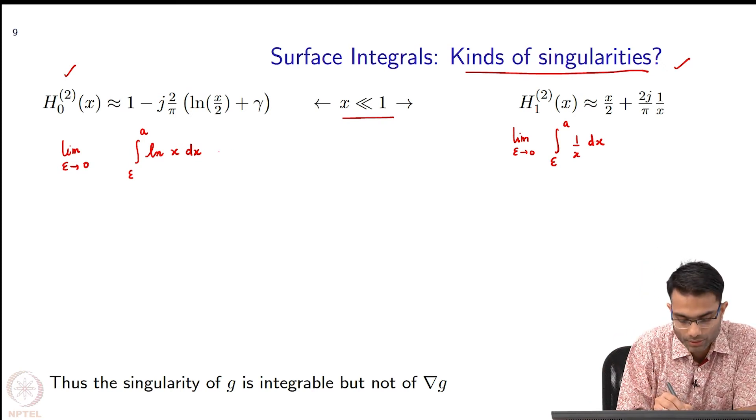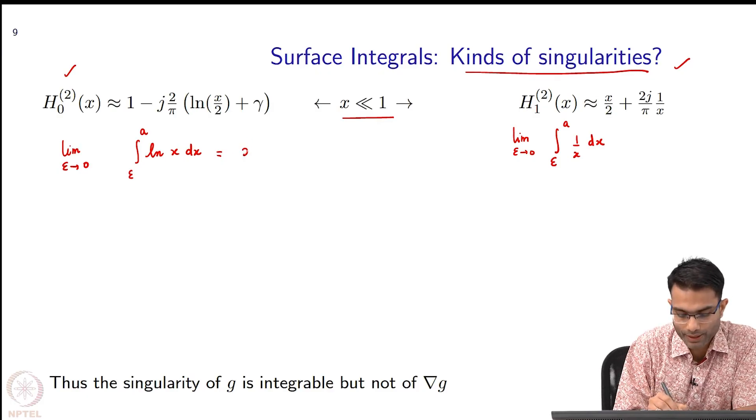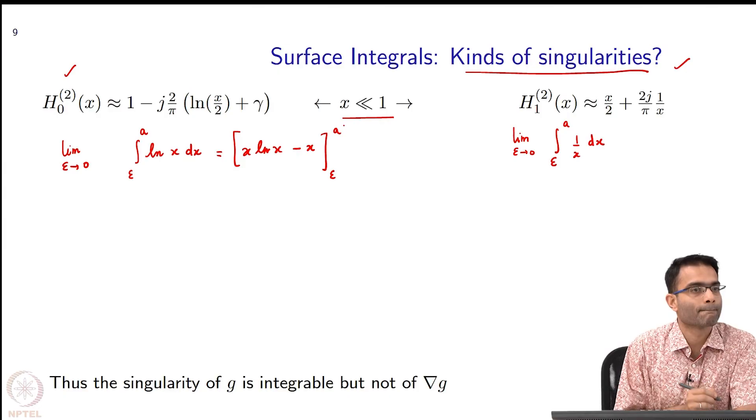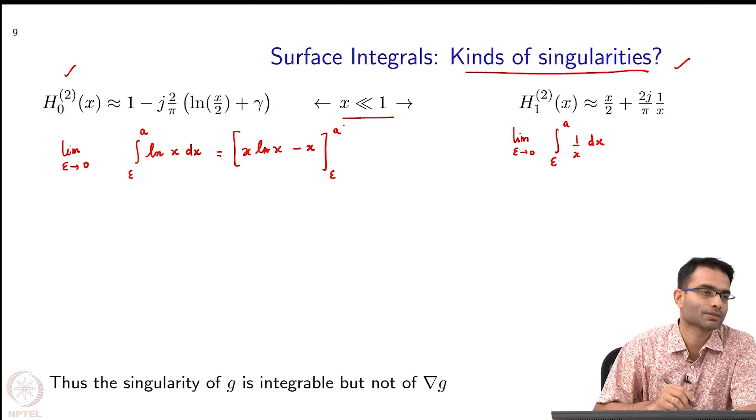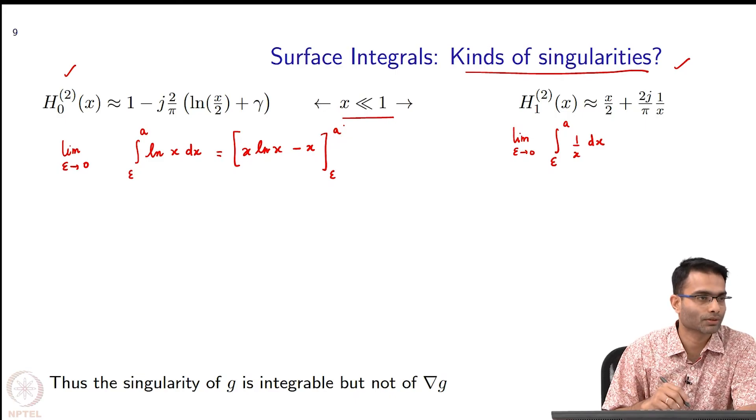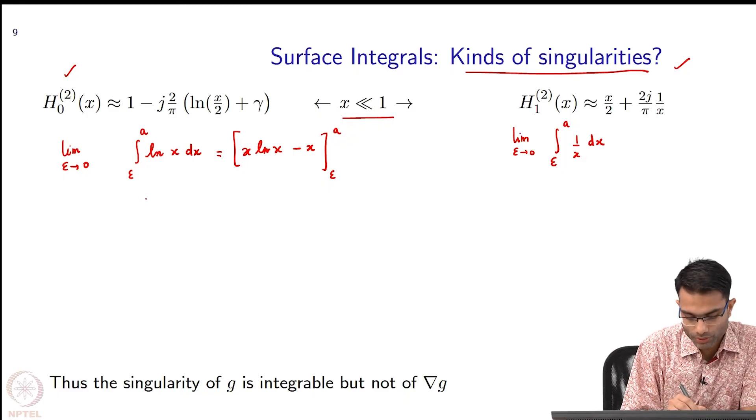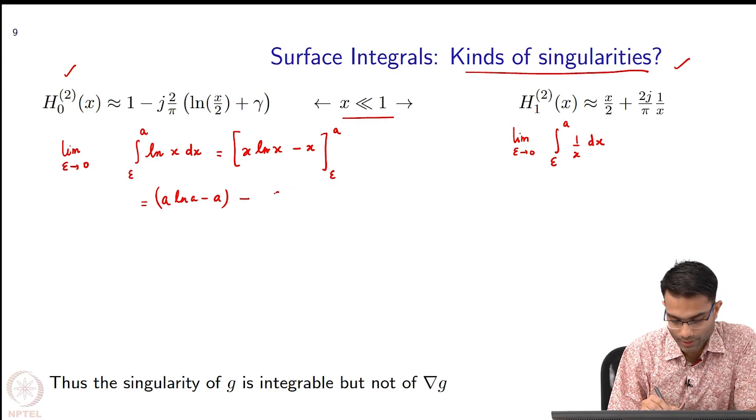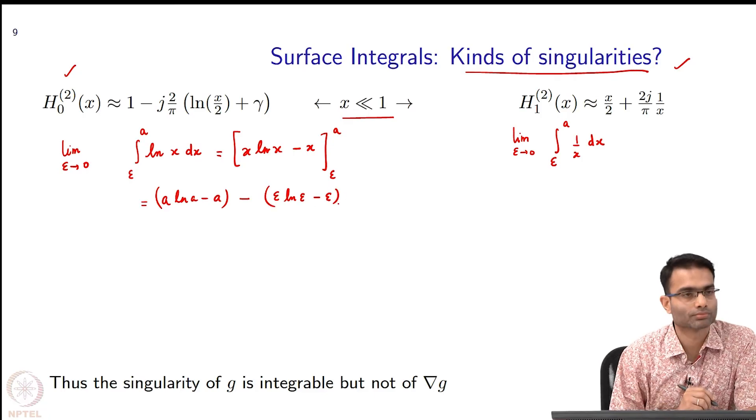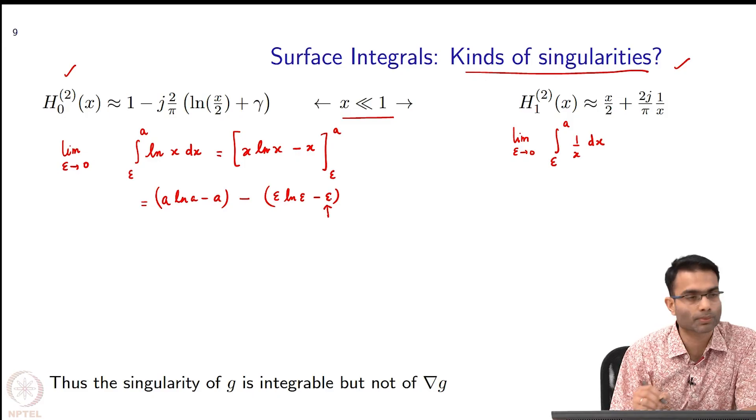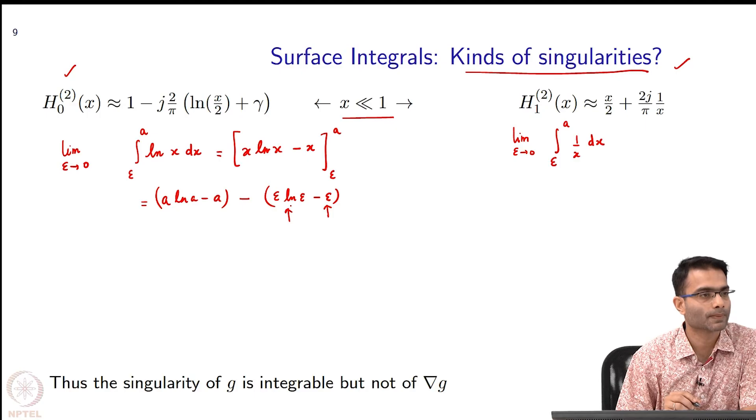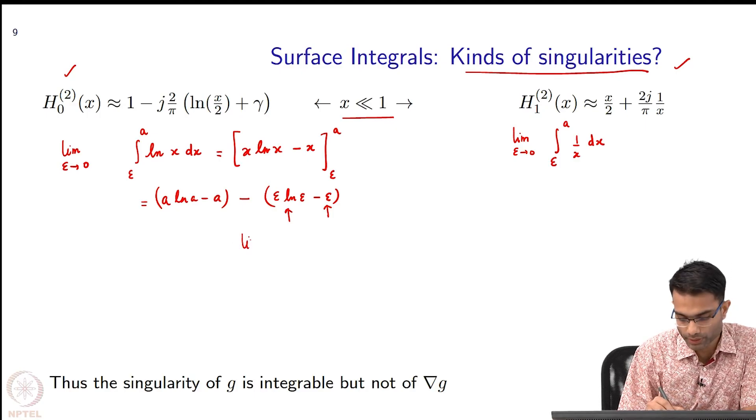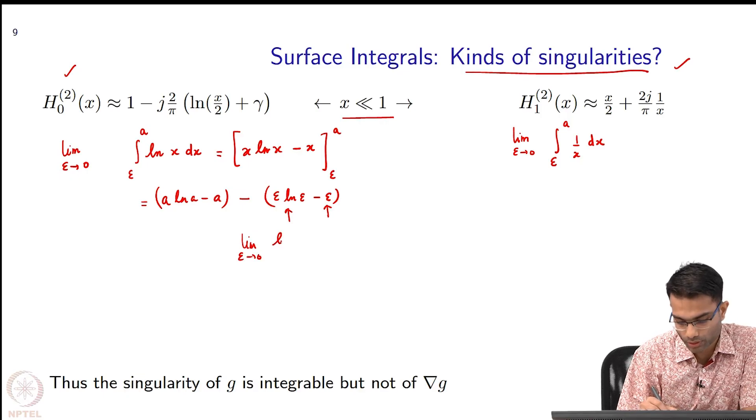What is the integral of log x? We can do it by parts. You will get x log x minus x evaluated at epsilon and A. If you want to check, just take a derivative. We will get x into 1 by x plus log x minus 1. This is going to give me A log A minus A, no problem with this because A is some finite number, and then I have to evaluate epsilon log epsilon minus epsilon. Epsilon tending to 0, this guy there is no problem. What about this guy? How do I evaluate this? Lopithals rule.